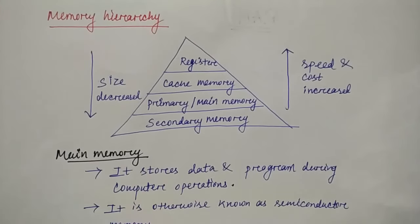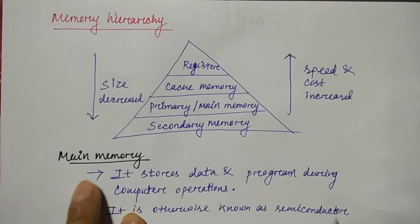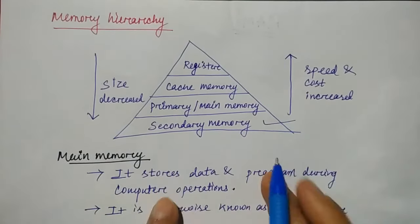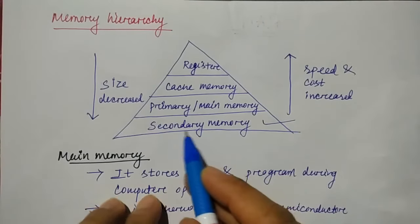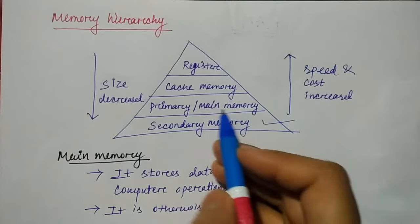After that, we will see the types of memory and hierarchy. I have represented the hierarchy here. The lowest part is secondary memory, then primary memory and main memory. Both are the same.